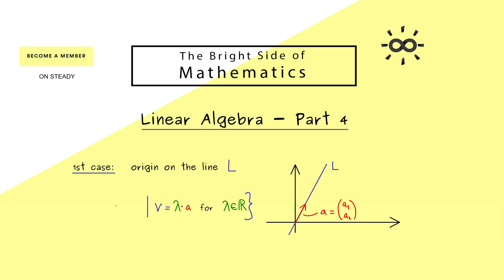And therefore we can describe the line L with this set here. More precisely we would say this is the set of all vectors V that fulfill that they are given in the form lambda times A. And then we are finished the line L is described with this set. So you see we only have to put in one vector for the direction.